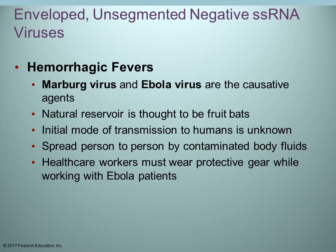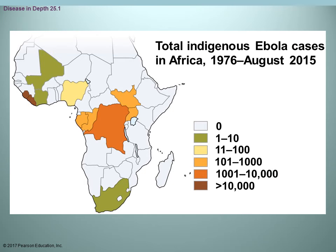Some hemorrhagic fevers are still negative single-stranded RNA viruses. The Marburg virus and Ebola virus are causative agents. Their natural reservoirs are believed to be fruit bats. The initial route of transmission to humans is unknown. Once in a human, it can be spread person-to-person by contaminated fluids. Healthcare workers must wear personal protective equipment when working with Ebola patients. A map shows the outbreak of Ebola cases in Africa from 1976 to August 2015, with repeated outbreaks.